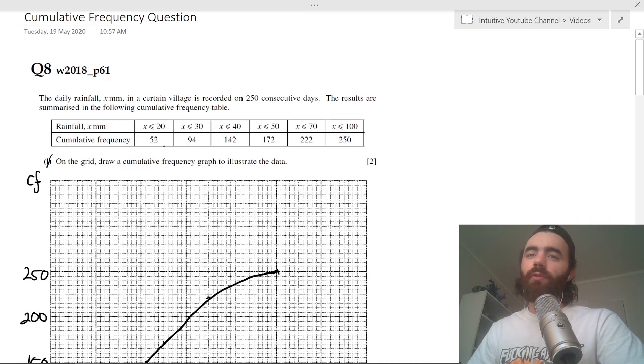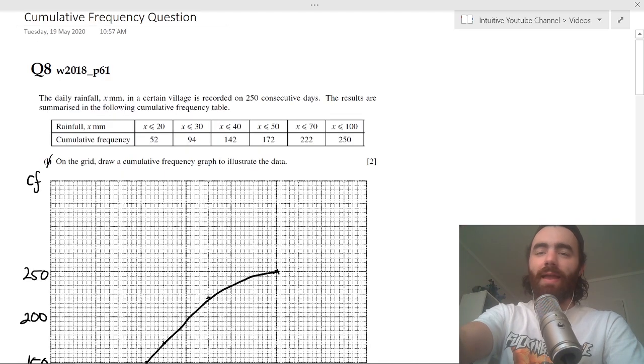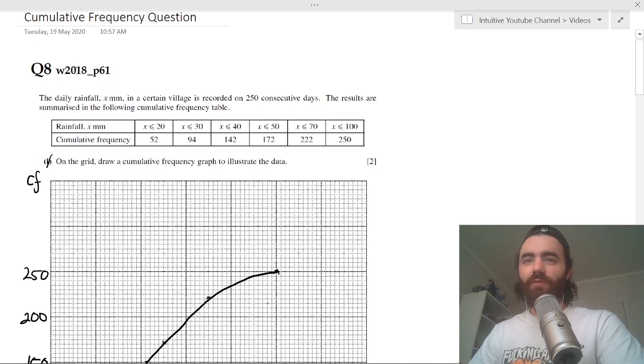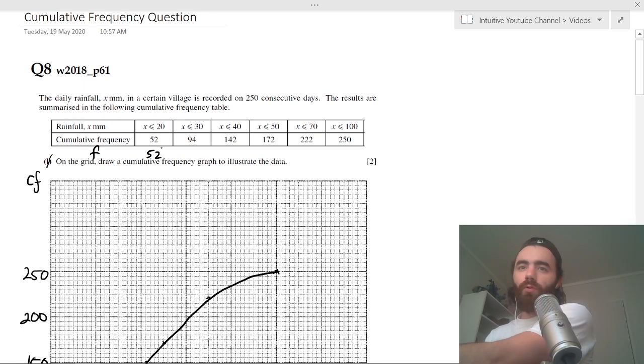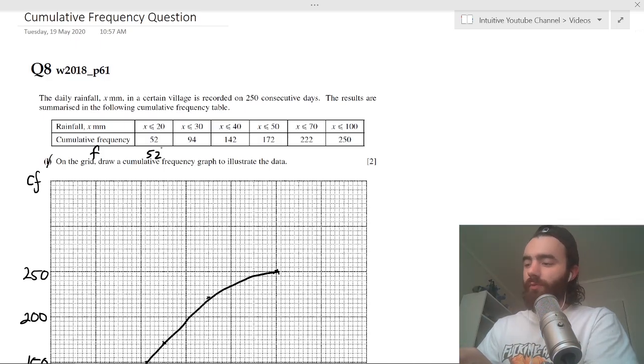The sum of all the frequencies for this case is the 250 consecutive days. Then the sum of xf - well, we need to find the actual frequencies for these intervals. Remember, these are the cumulative frequencies, so it's like adding up.